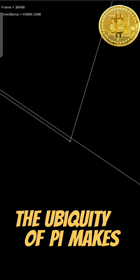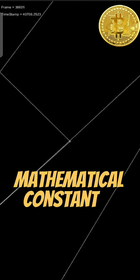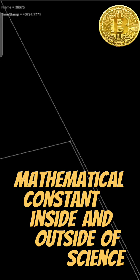The ubiquity of pi makes it one of the most widely known mathematical constants inside and outside of science. Several books devoted to pi have been published, and record-setting calculations of the digits of pi often result in news headlines.